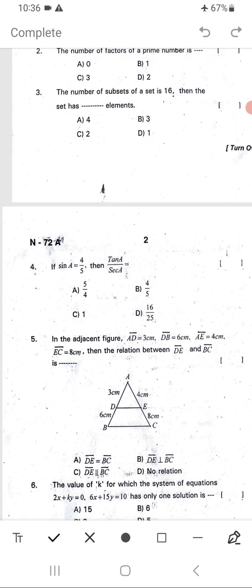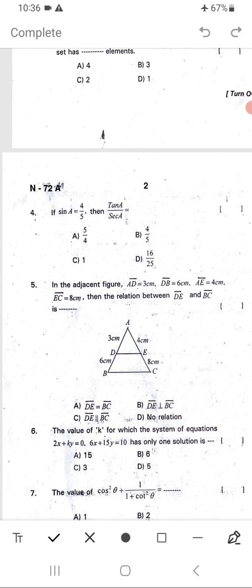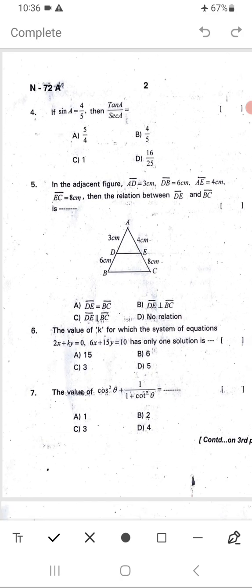AD = 3 cm, DB = 6 cm, AE = 4 cm, EC = 8 cm, then the relation between DE and BC is what? See the figure carefully. Sixth question: The value of k for which system of equations 2x + ky = 0, 6x + 15y = 10 has only one solution.